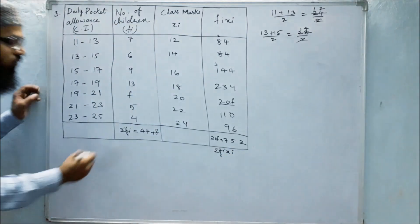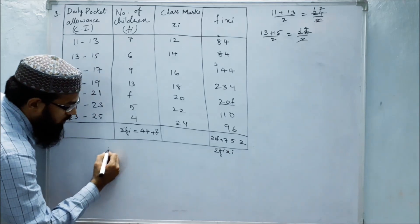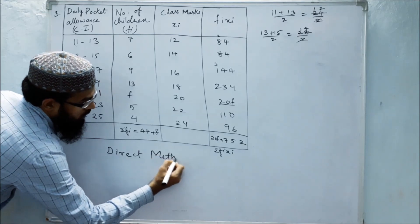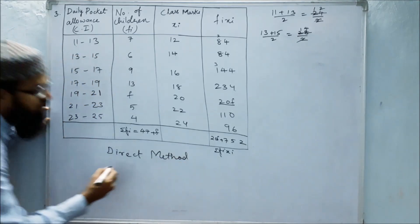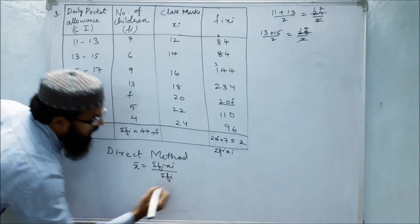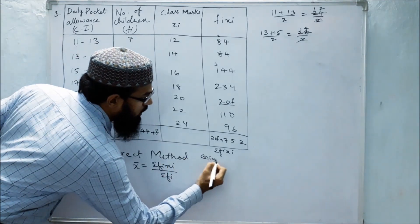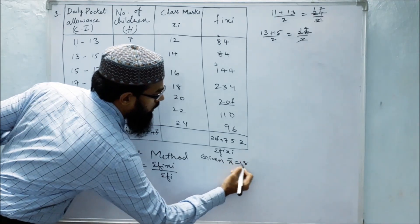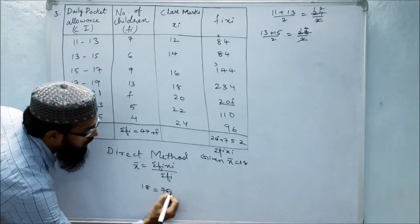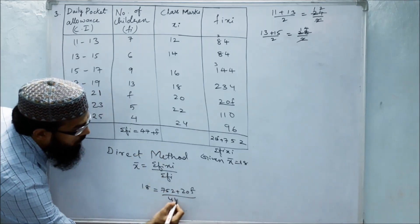In direct method, the formula for mean is x̄ equals summation fixi by summation fi. Here they have already given the mean. So what is given? Given x̄ equals 18. Therefore, 18 equals 752 plus 20f by 44 plus f.